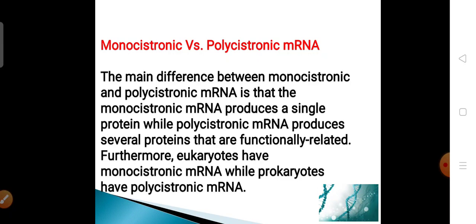Eukaryotes generally contain monocistronic mRNA while prokaryotes contain polycistronic mRNA. Monocistronic mRNA is generally found in eukaryotic organisms, owing to the size of the organism, whereas prokaryotes, because of their small size, generally synthesize polycistronic mRNA.